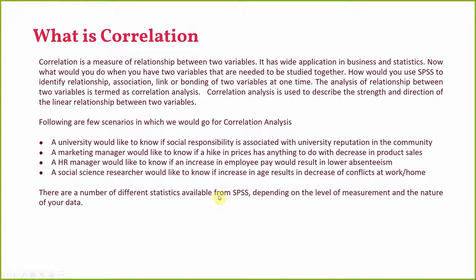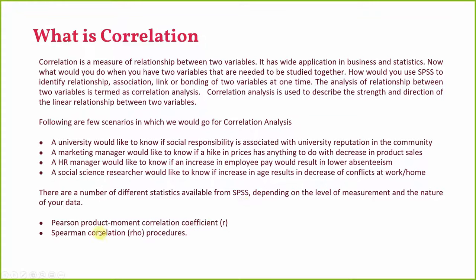There are different statistics available from SPSS depending on the level of measurement and the nature of your data. Two types of correlation can be used: Pearson product moment correlation, shown by R, and Spearman correlation Rho. If your data is on interval scale and normally distributed, use Pearson. If your data is on ordinal scale, use Spearman Rho. Use correlation analysis when you want to assess the significance and strength of relationship between two variables.